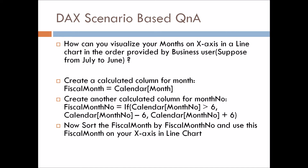Let's start with the first question: how can you visualize your month on the X-axis in a line chart in the order provided by the business user — suppose from July to June? We have a line chart where Y-axis represents revenue and X-axis represents months, with July as the starting month and June as the ending month. How can we achieve this requirement?